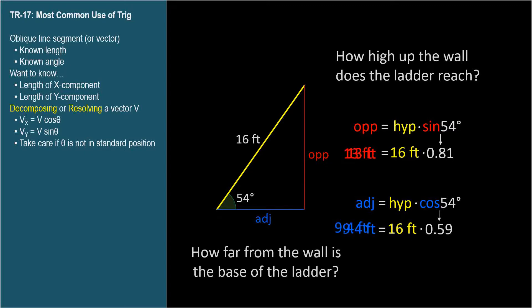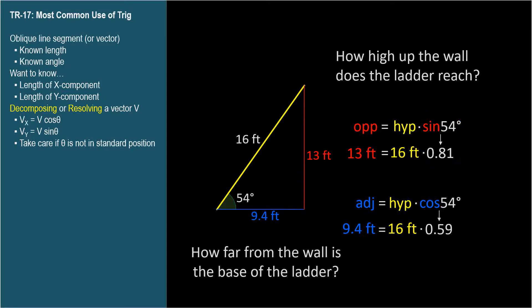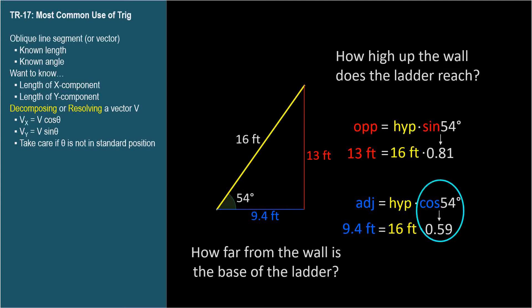The answers to our questions are 13 feet for the distance up the wall, and 9.4 feet to the base of the ladder. This side is 81% the length of the hypotenuse because the sine of this angle is 0.81, and this side is 59% the length of the hypotenuse because the cosine of this angle is 0.59.